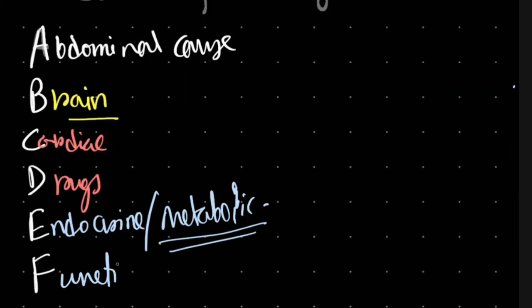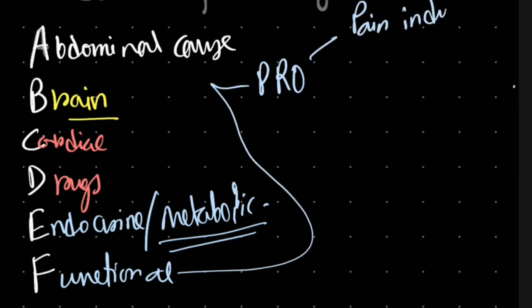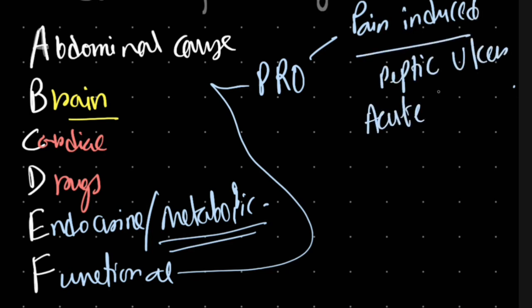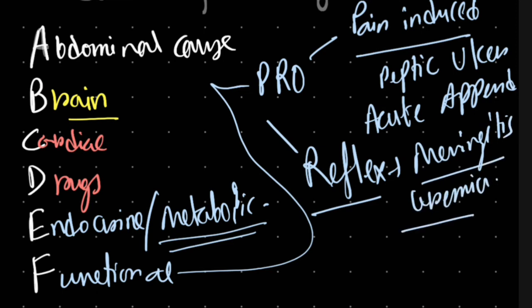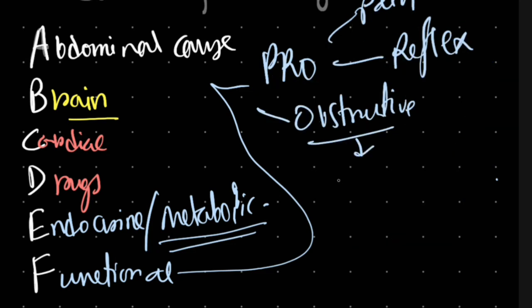F is for functional causes, which can be divided using PRO. P is for pain-induced, like peptic ulcer or acute appendicitis. R is for reflex vomiting, such as from meningitis or uremia. Diabetic ketoacidosis is also a metabolic cause. O is for obstructive causes like intestinal obstruction or esophageal obstruction.